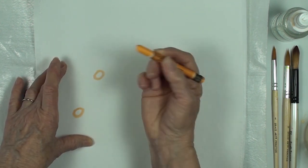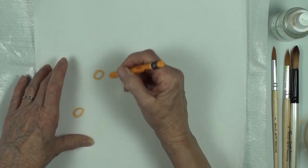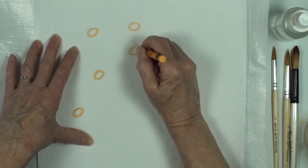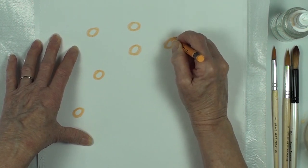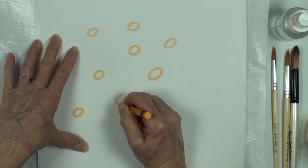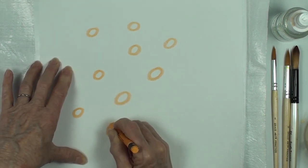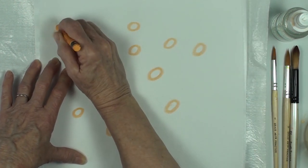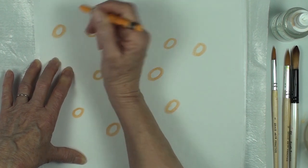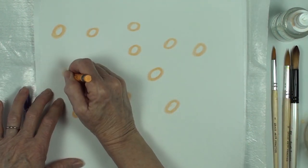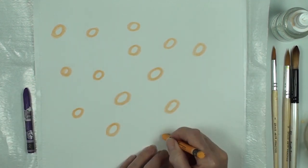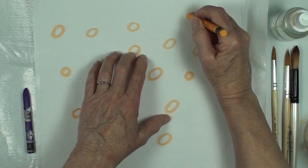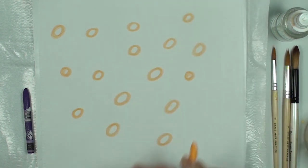So I'm just going to randomly, make sure your neocolor 2s are very sharp if you're doing a specific shape. I'm just going to randomly put these oval, oval-ish circles around, change the size a little bit. I'm pushing pretty hard, I want the pigment to go down on the fabric. Make sure you have the fabric side up. I've done this accidentally and realized I was drawing on the freezer paper, not what you want to do.